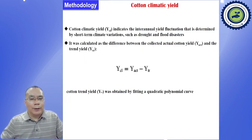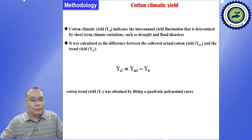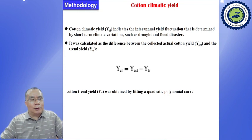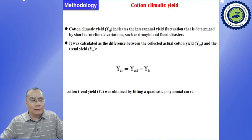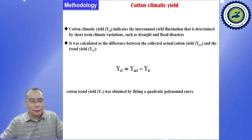Lastly, we calculate the abrupt calamity yield. The abrupt calamity yield consists of two parts: the calamity yield and the trend yield. So, the abrupt calamity yield is calculated by the total yield minus the trend yield.